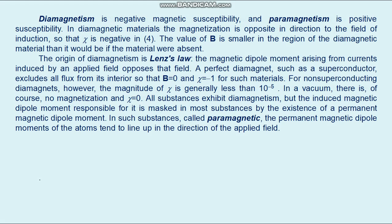For non-superconducting diamagnets, however, the magnitude of χ is generally less than 10 to the minus 5. In a vacuum there is no magnetization and χ equals zero. All substances exhibit diamagnetism, but the induced magnetic dipole moment responsible for it is masked in most substances by the existence of permanent magnetic dipole moments. In such substances, called paramagnetic, the permanent magnetic dipole moments of the atoms tend to line up in the direction of the applied field. The magnetization M is in the direction of B and χ is positive; for typical paramagnetic materials χ equals 10 to the minus 4.